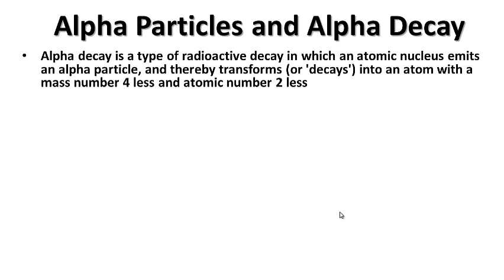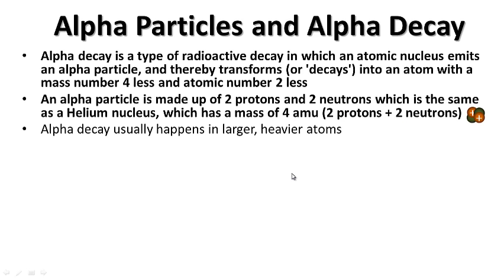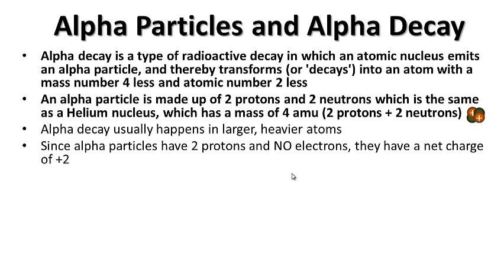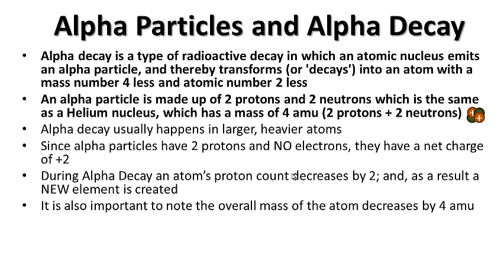Alpha particles and alpha decay. Alpha decay is a type of radioactive decay in which an atomic nucleus emits an alpha particle, thereby transforming into an atom with a mass number that is four less and an atomic number that is two less. An alpha particle is made up of two protons and two neutrons — the same as a helium nucleus — with a mass of 4 AMU. Alpha decay usually happens in larger, heavier atoms. Since alpha particles have two protons and no electrons, they have a net charge of plus two. The atom's proton count decreases by two, a new element is created, and the overall mass decreases by four.